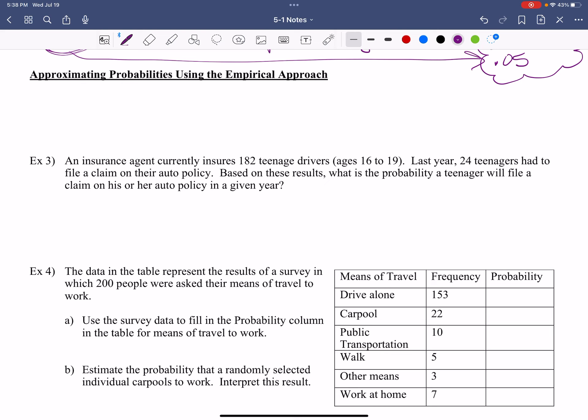The first approach that we're going to do is called the empirical approach. So the empirical approach is the probability of an event is going to equal the frequency of the event, whatever it is that we're talking about, over the number of trials.